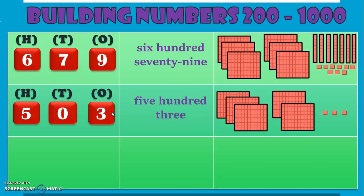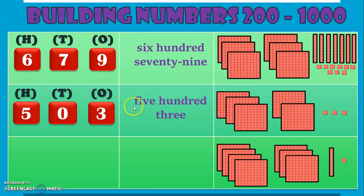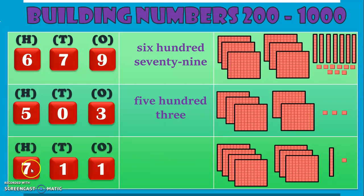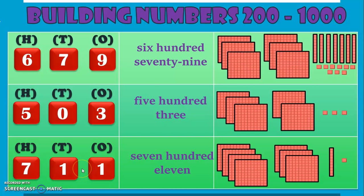Now let us move on to the next number. How many 100s do we have? 1, 2, 3, 4, 5, 6, 7 — we have 7 hundreds, 1 ten, and 1 one. So how do we represent this number? 7 hundreds, 1 ten, and 1 one — what number does it make? Seven Hundred and Eleven — 7, 1, 1.